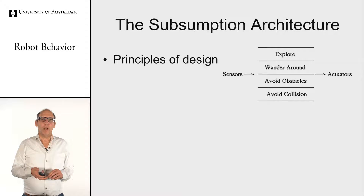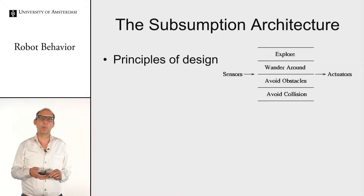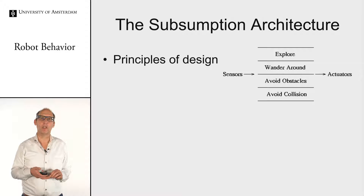The subsumption architecture is very often used as a principle of design. The most important feature is that several behaviors are defined, and they all work together in parallel. Each behavior takes the sensor output and sends out actuator commands. The architecture makes sure that the correct behavior gets control over the actuators, but not all conclusions are executed.